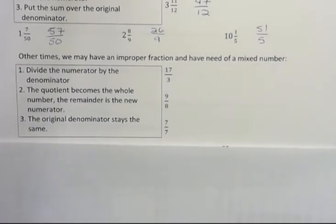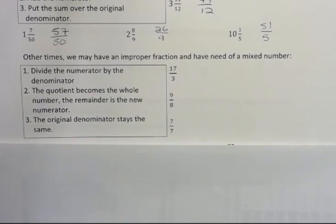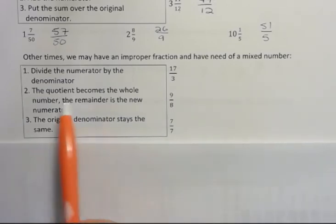That is divide the numerator by the denominator. This is a little more confusing to hear. It's not so bad when you're actually doing it. The quotient becomes the whole number and the remainder is the new numerator. And as always, the denominator stays the same.